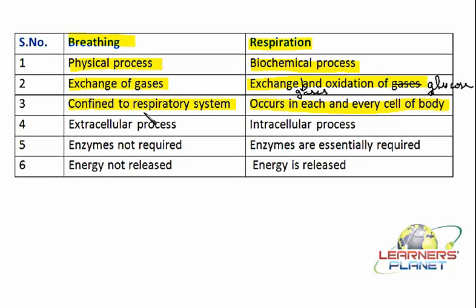Respiration occurs in each and every cell of the body. The gases exchanged in the respiratory system are transported to every part of the body through the blood. Red blood cells contain the pigment hemoglobin, which carries oxygen and transports it to the target site. So while the transport and reaction occur in each cell, gas exchange occurs only in the respiratory system.